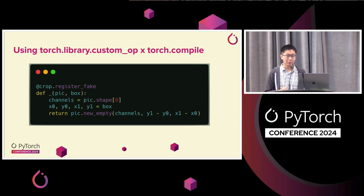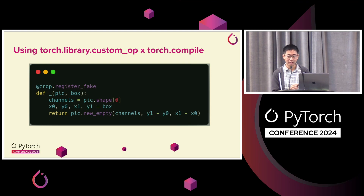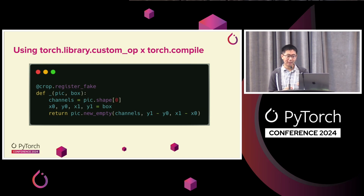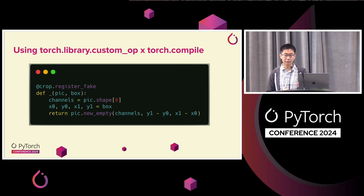To use a custom op with Torch.compile, you have to write what is known as a meta kernel. The way Torch.compile works is it takes a Python function and does graph capture to produce a graph. To do this graph capture, Torch.compile runs through your function without real tensors — it uses dummy fake tensors, which are basically regular tensors but with no data. So you need to tell PyTorch: given a dummy tensor with some shape, how do you create a dummy tensor with the correct output shape? Using the torch.library.register_fake API, you provide that registration for a given custom operator.